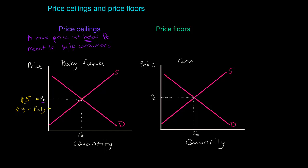Starting at our original equilibrium, notice that as the price of baby formula falls, the quantity demanded by consumers is going to increase. People that may not have bought baby formula before are now going to demand a greater quantity, and those already buying it are also going to demand more. The law of demand says that as the price falls from $5 to $3, the quantity demanded increases — we move along our demand curve. A change in price does not shift the demand curve; rather it leads to a new quantity demanded. I'm going to label that QD on my graph. So far this looks pretty good for consumers — there will be more baby formula demanded because it's more affordable.